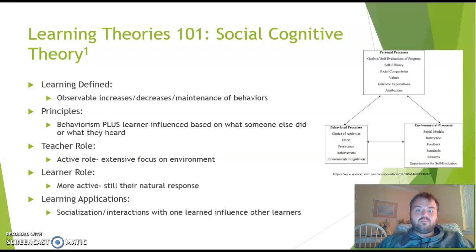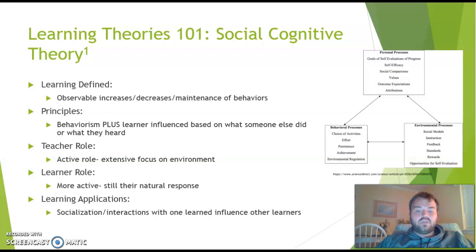The social cognitive theory is defined as observable increases and decreases in the maintenance of behaviors with a social aspect. The principles build on behavioralism, adding learner influence based on what someone else did or heard. The teacher role remains active with a focus on the environment. The learner role is more active but still rooted in natural response. Learning applications include socialization and interactions where one learner's influence affects other learners.